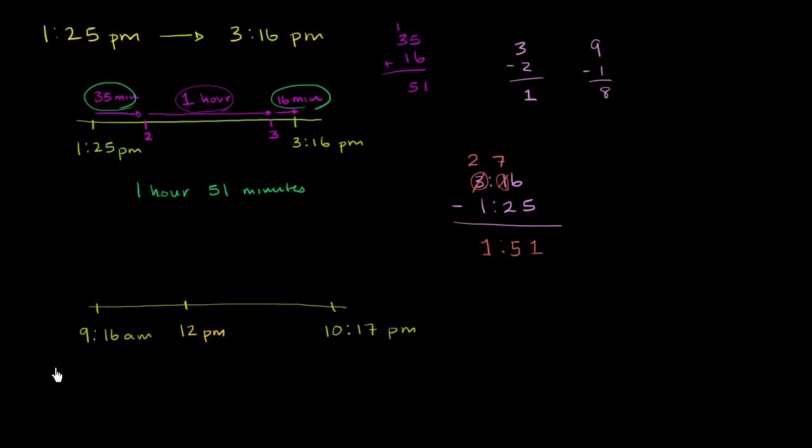So if this is 12 PM right over here, it's going to take 44 minutes to get to 10 AM. That's to get to 10 AM. I got 44 by subtracting 16 from 60. Then we have another 2 hours till noon. And then we have 10 hours and 17 minutes till 10:17 PM.